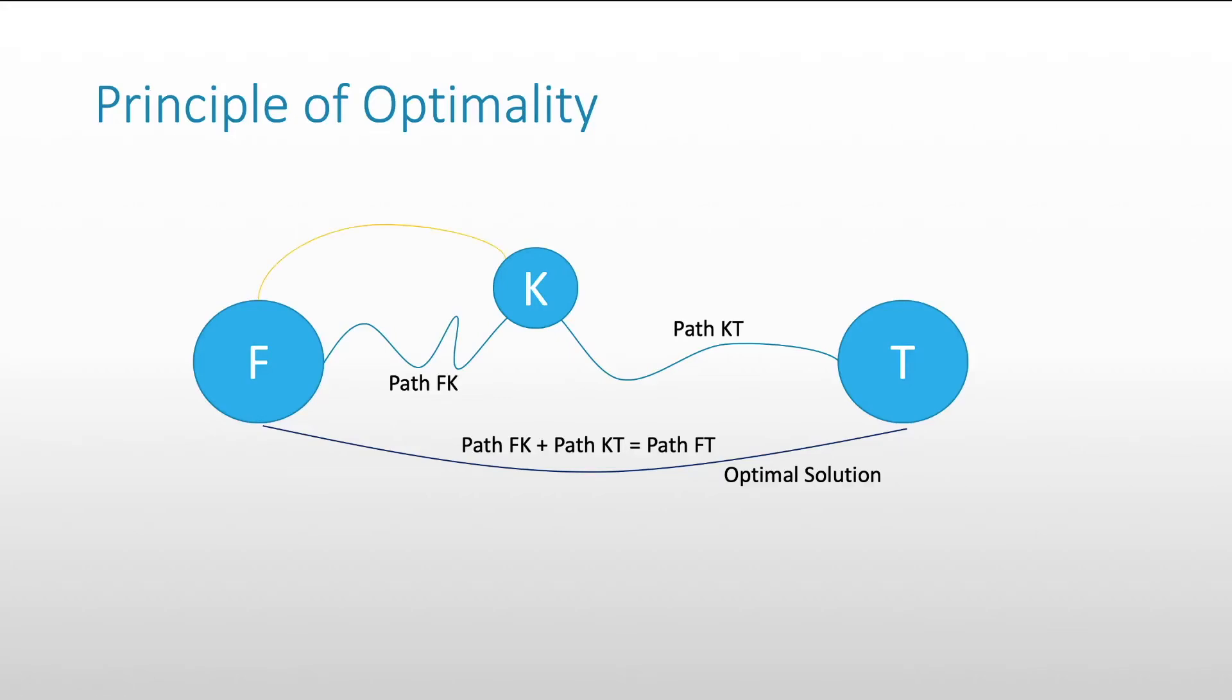If, for an instance, there is another path called path f of K star, and if this path is less than f of K, that means that path f of K star plus path K of T is less than path f of K plus path K to T. But then, we know that path f of K and path K to T is our optimal solution. This means that path f of K star does not exist. That is the principle of optimality because we know that path f of K and path K of T are already optimal solutions.